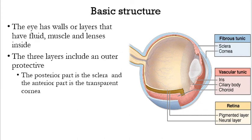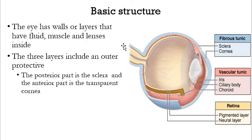The basic structure of the eye is that it has three major components, known as layers or walls. We have the first layer which is known as the fibrous tunic. It has the sclera at the back — the posterior end is known as the sclera — and in front of it, we have the cornea.